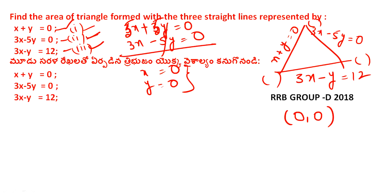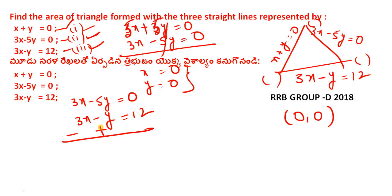Next, we simplify equations 2 and 3. Equation 2: 3x − 5y = 0. Equation 3: 3x − y = 12. Subtracting, minus 4y = minus 12, so y = 3. Substituting y = 3 into the second equation, we get x = y, so x = 5 and y = 3. Second point is (5, 3).